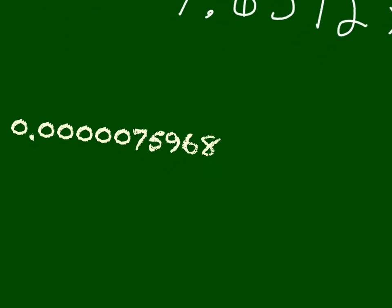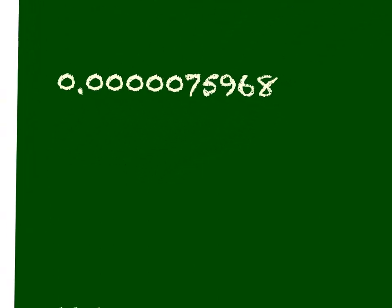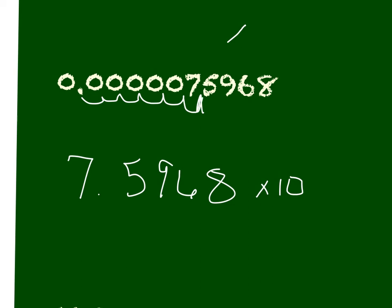So in our second example here, we have a small number. And in order to write a small number in scientific notation, we want to place the decimal between the 7 and the 5 here. So our value is going to be 7.5968. And the beauty of scientific notation is we are taking away all of those zeros, and we're replacing it with a power of 10 so that we can write our number a little smaller. And if you look at this example here, how many spaces did we move this? We moved it 1, 2, 3, 4, 5, 6. We moved it 6 spaces. But again, since this is a small number, we're going to use the negative 6 power.